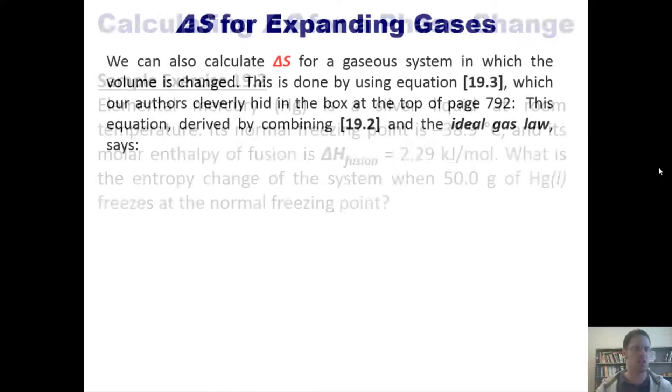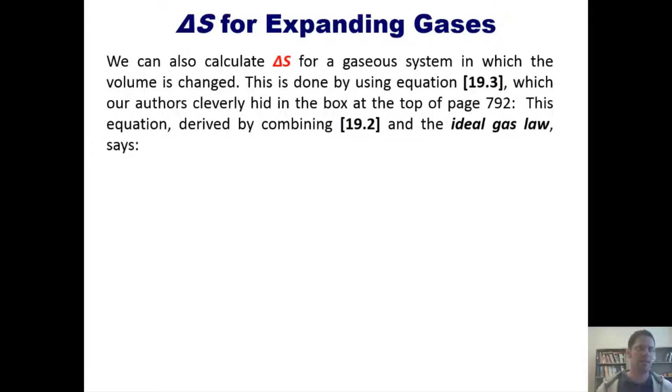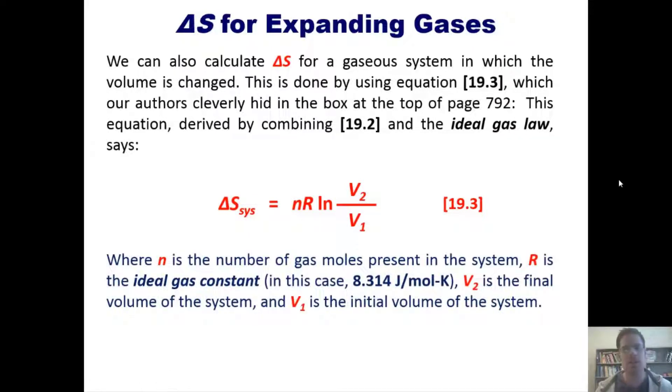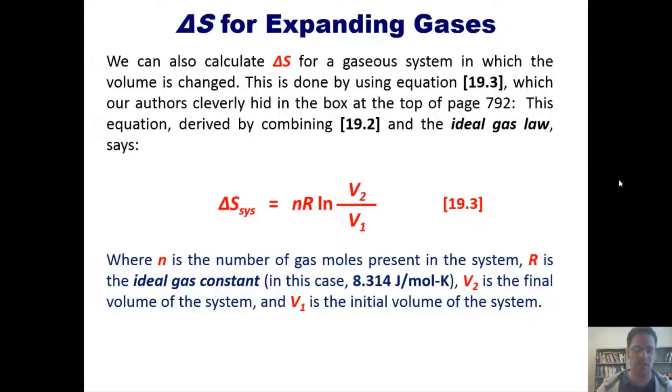That takes us then to delta S for expanding gases. We can also calculate delta S for a gaseous system in which the volume is changed. This is done by using equation 19.3 from our book, which our authors cleverly hid in a box at the top of page 792. This equation, derived by combining 19.2 in the ideal gas law, says this: that the delta S of any system is equal to n times R times the ln of V₂ divided by V₁, where n is the number of gas moles that are present in the system, R is the ideal gas constant (in this case 8.314 joules per mole kelvin or joules per molk), V₂ is the final volume of the system and V₁ is the initial volume of the system.